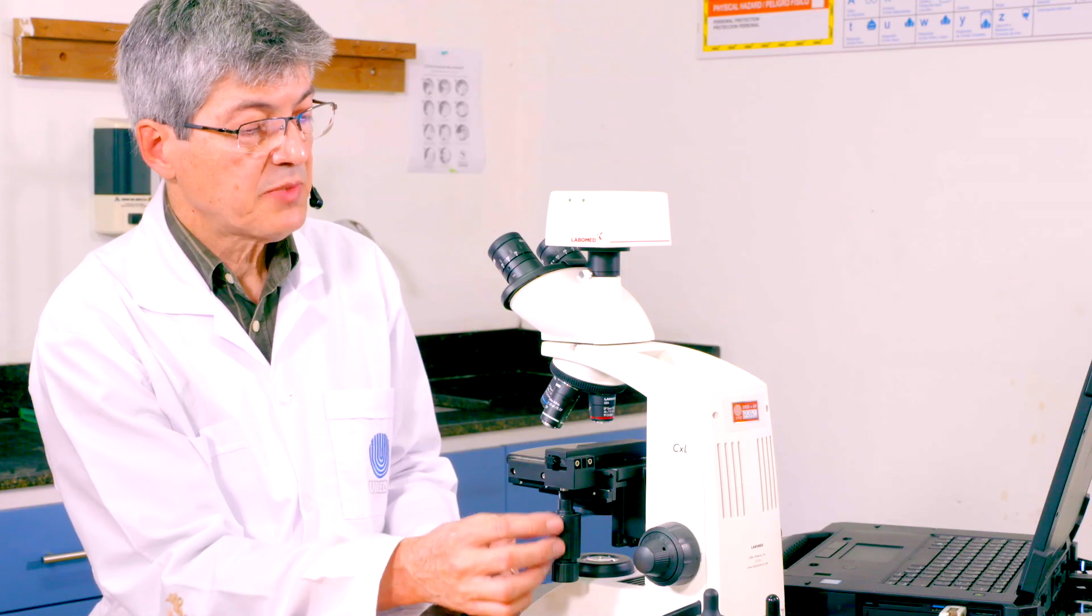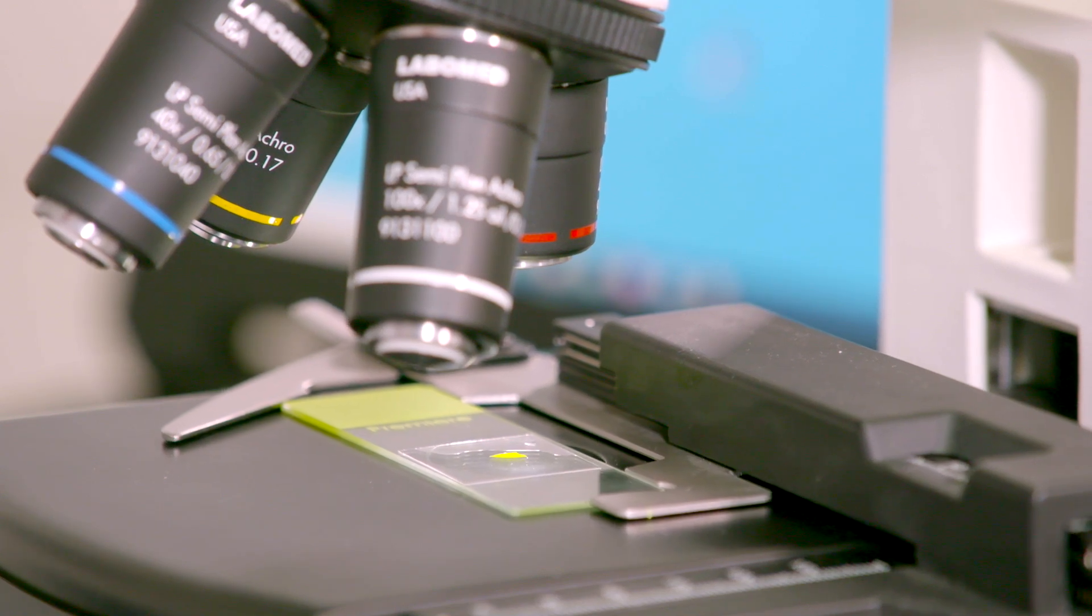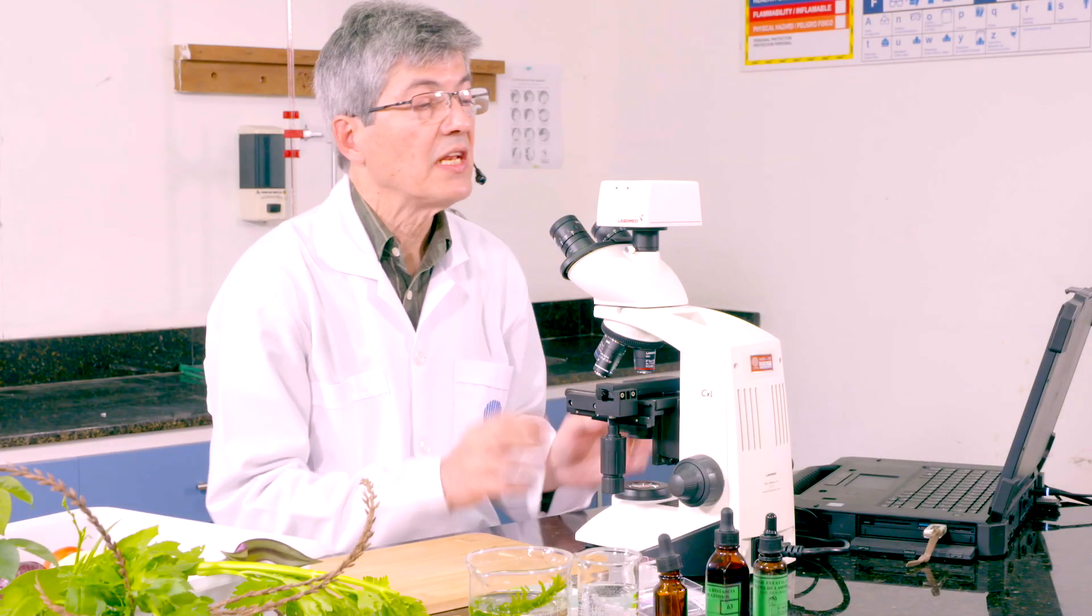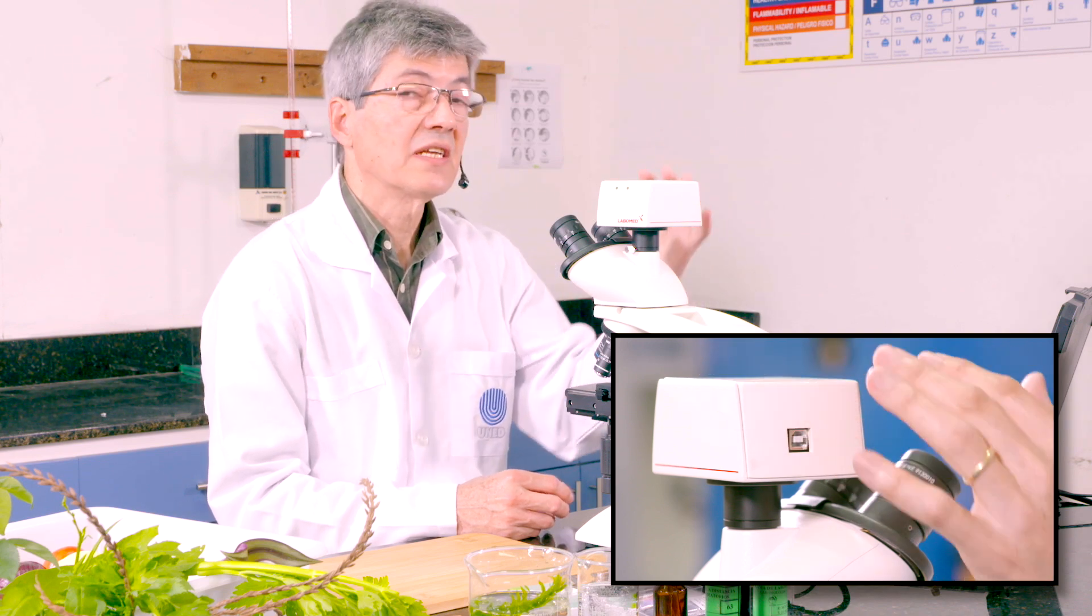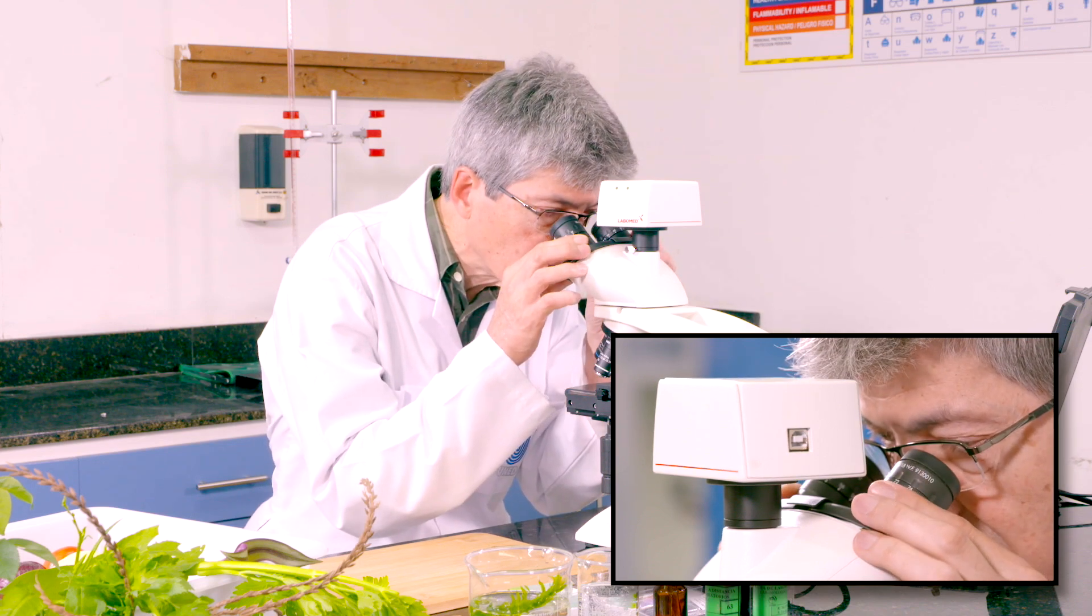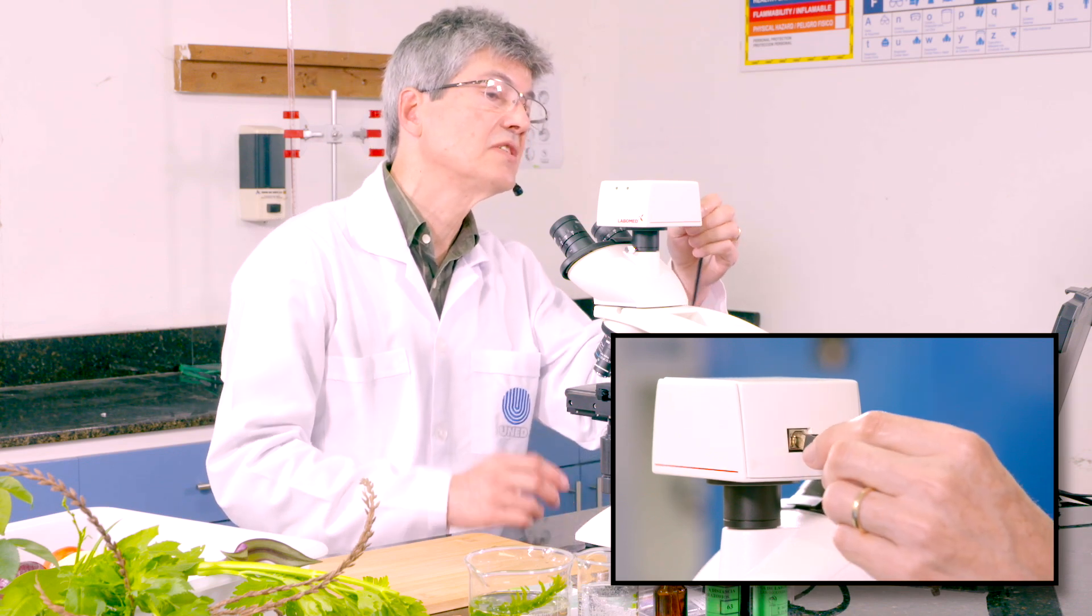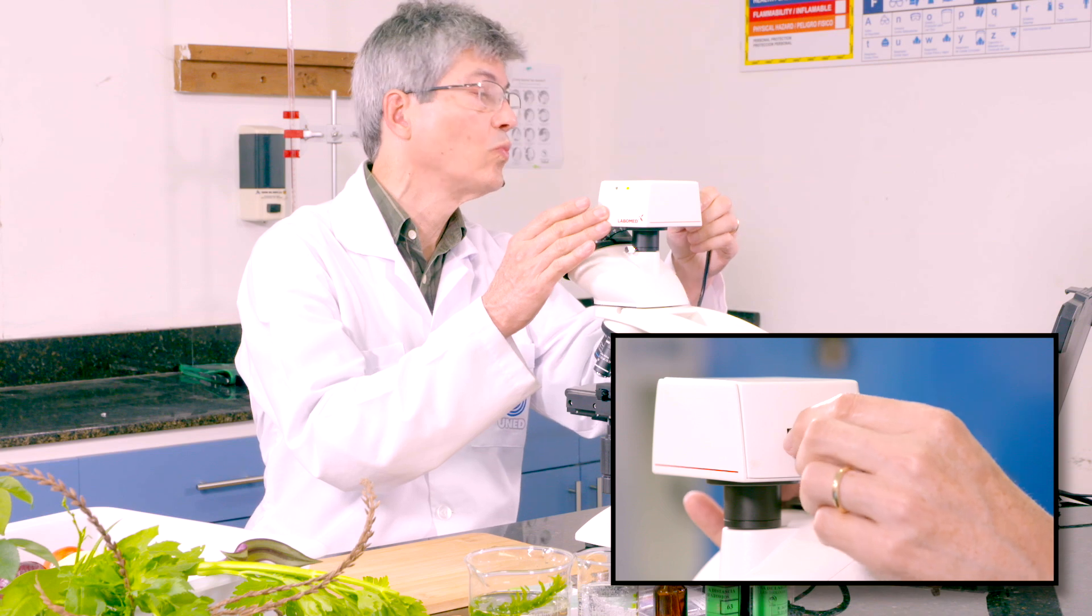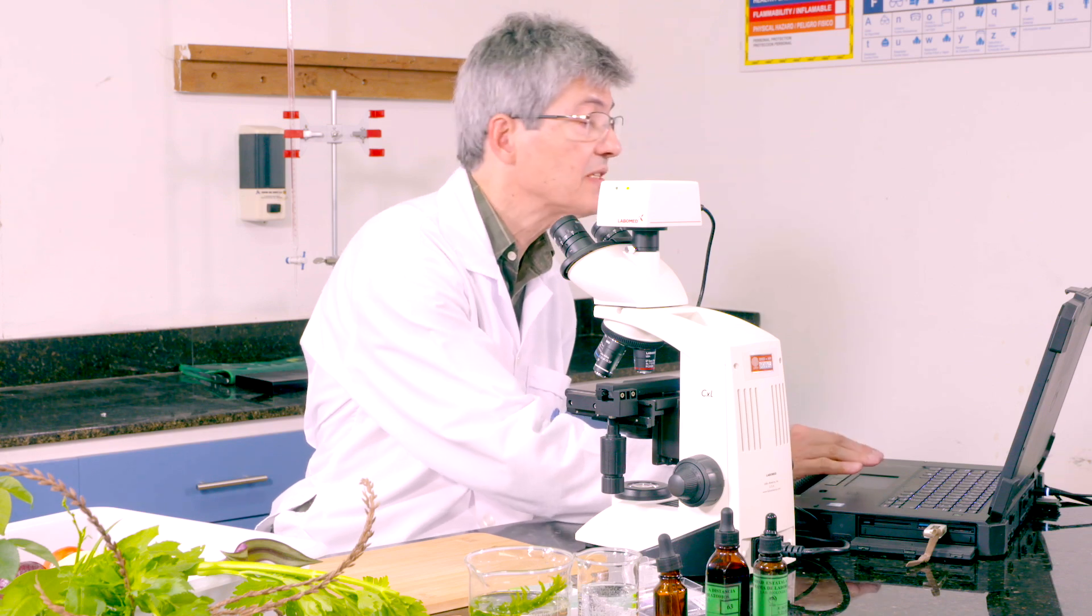Procedemos a encender nuestro microscopio. Y utilizando las perillas que mueven el carro, vamos a utilizar nuestra muestra exactamente por donde va el haz de luz. Con este microscopio tenemos la gran ventaja de que tiene una cámara adaptada. Con esta cámara ustedes van a poder apreciar lo que yo estoy viendo a través de los lentes oculares. Entonces vamos a proceder a conectar la cámara a nuestro sistema de cómputo. Y vamos a proceder a abrir nuestro programa para que ustedes puedan apreciar lo que yo estoy viendo también.